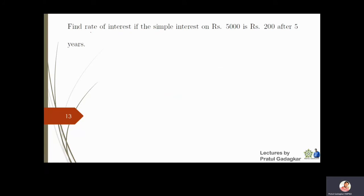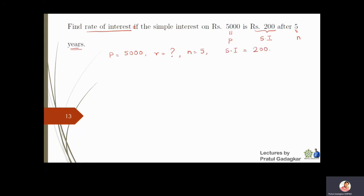Now we are supposed to find the rate of simple interest. The principal is rupees 5000, the simple interest turned out to be rupees 200, and the number of years is five. So P = 5000, n = 5, SI = 200, and r is unknown. Using SI = P × n × r / 100, we write: 200 = 5000 × 5 × r / 100.